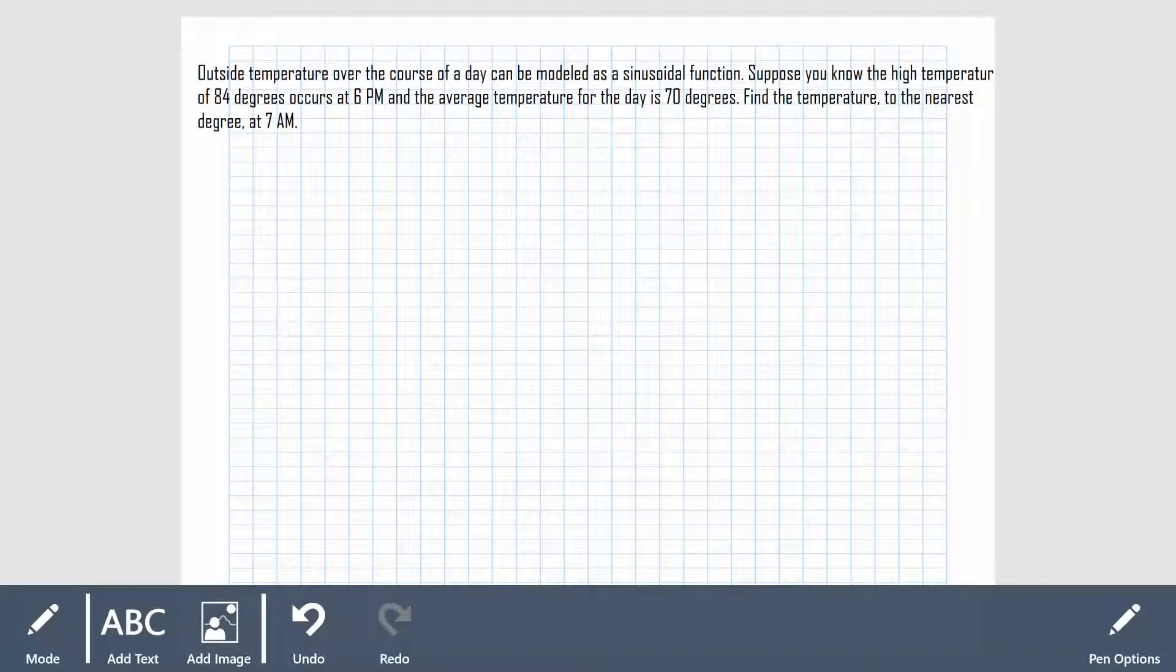Let's consider the situation. Outside temperature over the course of a day can be modeled as a sinusoidal function. Suppose you know the high temperature of 84 degrees occurs at 6 p.m. and the average temperature for the day is 70 degrees. Find the temperature to the nearest degree at 7 a.m.